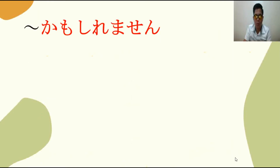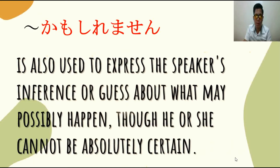Dito, matututunan natin kung ano ang ibig sabihin at kung paano kagamitin si Kamo Shirimasen in a sentence. Kamo Shirimasen is used to express the speaker's inference or guess about what may possibly happen, though he or she cannot be absolutely certain. Ibig sabihin, ginagamit na natin si Kamo Shirimasen if gusto nating hulaan ang posibleng mangyari, kahit hindi tayo sigurado.